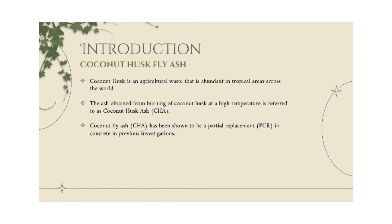Coconut husk fly ash. Coconut husk is an agricultural waste that is abundant in tropical areas across the world. Coconut is known as the tree of life by certain tropical cultures because the flesh and milk of the nut provide food and drink. The tree provides attractive and long-lasting timber for homes. Coconut husk could also be used to make floor mats and garments. In addition, coconut husk fly ash has been shown to be a partial replacement in concrete in previous investigations.